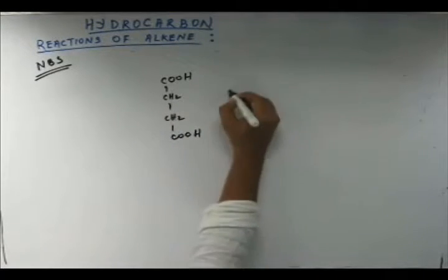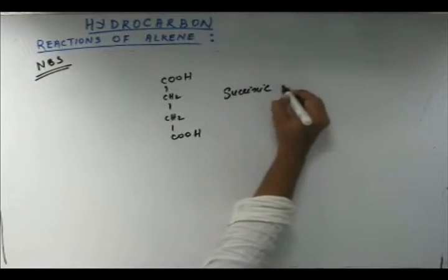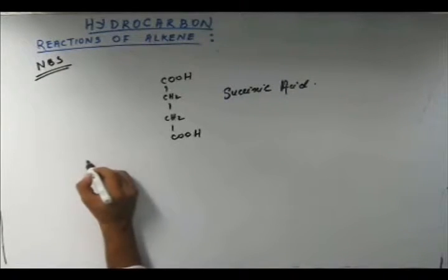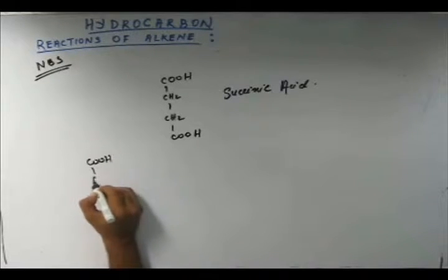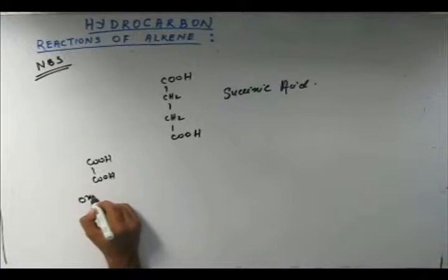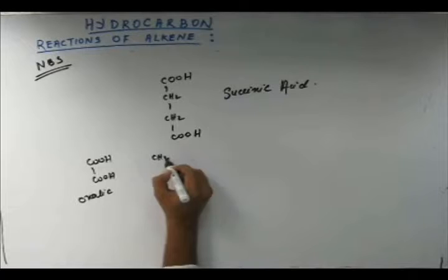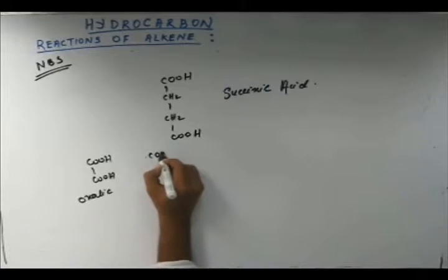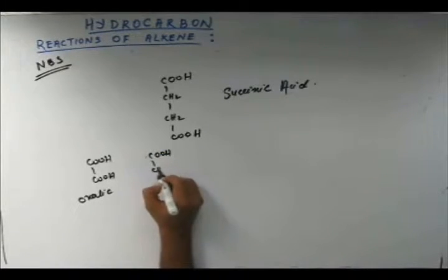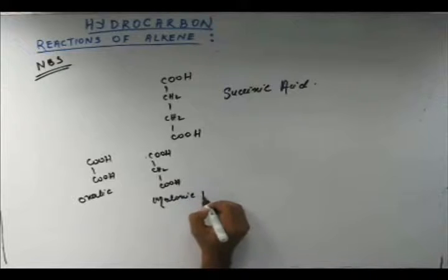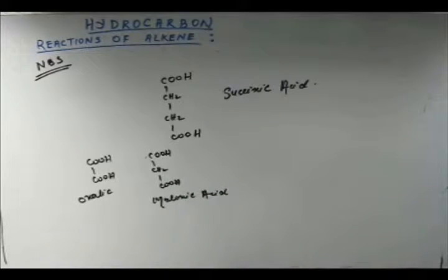This is succinic acid. Now there are certain dicarboxylic acids which are important which you should know. If we start from the first smallest dicarboxylic acid of 2 carbon, this is oxalic acid. The next in the series would be dicarboxylic acid of 3 carbon. This is malonic acid. We will study this when we study the carboxylic acid chapter, but it will not hurt to know them here.